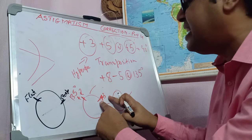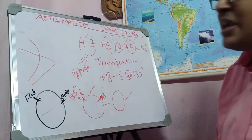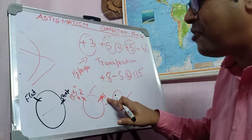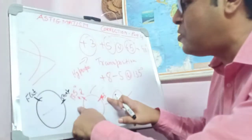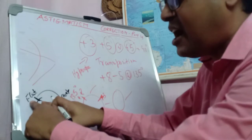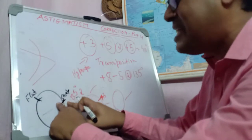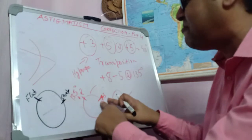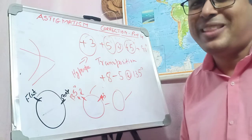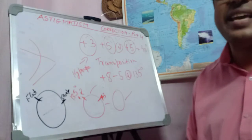In the eye, you have a steep meridian at 45 degrees — you want to negate it with the flatter meridian of the glass. This is how you actually negate astigmatism with glasses. In our next episode, we will cover the world of intraocular lenses and toric correction of astigmatism. Thank you very much for watching.